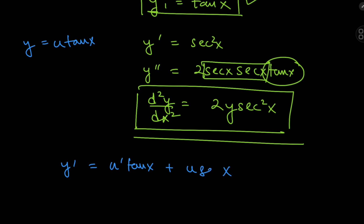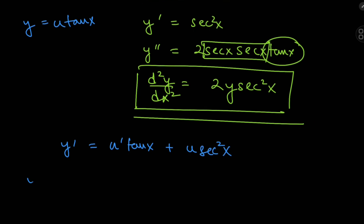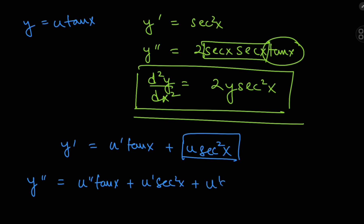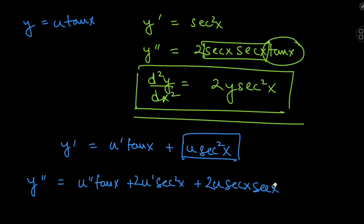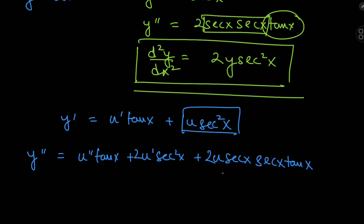Since our differential equation is second order, we differentiate once more to get y'' = u''·tan(x) + u'·sec²(x) + 2u'·sec²(x) + u·2·sec(x)·sec(x)·tan(x), which simplifies to u''·tan(x) + 2u'·sec²(x) plus the last term involving u·2·sec²(x)·tan(x).